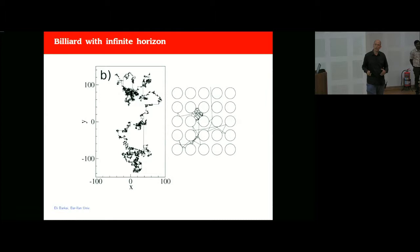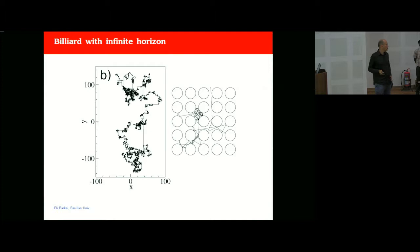The mind frame I have in mind is the Lorentz billiard: a system of scatterers arranged on a lattice with a so-called infinite horizon. Particles can flow in certain directions doing ballistic motion, colliding with scatterers. Once in a while a particle can go and move ballistically. If you look at one trajectory of this type of dynamics, you see regions where the motion looks diffusive.